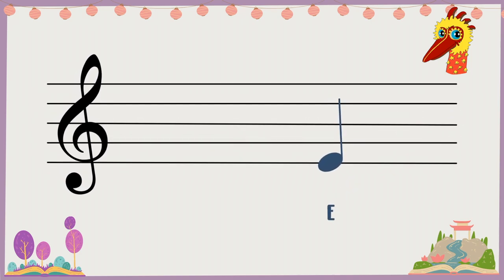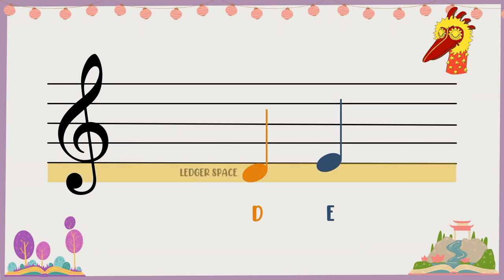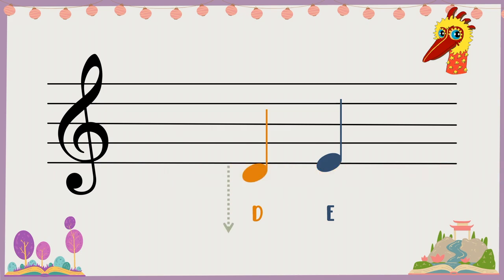This note is E. The note right below it is D. It's inside a ledger space. Ledger space? Yes. A ledger space is the space outside of the stave. It's invisible.